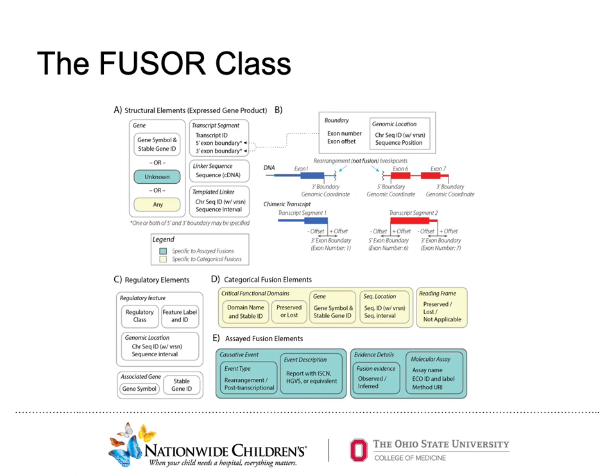Additionally, Fuser covers both the structural and regulatory elements that comprise fusion events, as you can see on the slide. These structural elements include the gene symbol and associated HGNC ID, transcript ID, and data describing a linker sequence, if present. The regulatory elements, in the context of categorical fusions, include the class, such as the functional domain, the ID, and genomic location. Although the use case of certain elements is specific to the type of fusion being described, Fuser is able to model a wide range of fusion events.